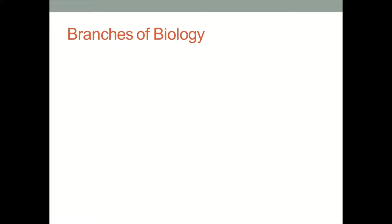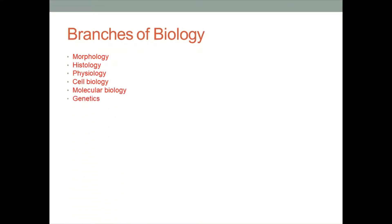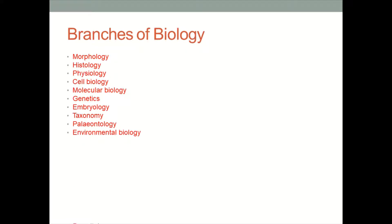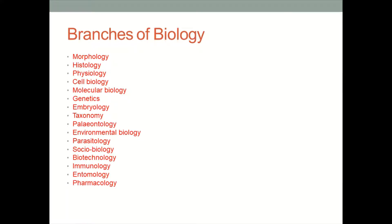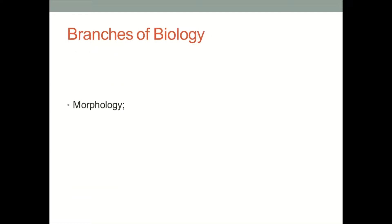First of all, we are going to know the names of these branches. They are: morphology, histology, physiology, cell biology, molecular biology, genetics, embryology, taxonomy, paleontology, environmental biology, parasitology, sociobiology, biotechnology, immunology, entomology, and pharmacology. These are the branches of biology. Now we are going to study them in detail.